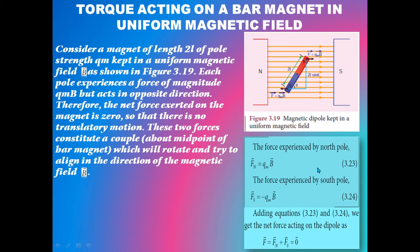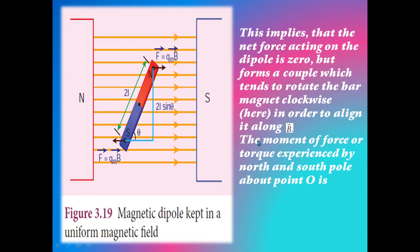Adding these two equations — both forces are equal but acting in opposite directions — we get F vector = F1 vector + Fs vector = 0. This implies that the net force acting on the dipole is zero.